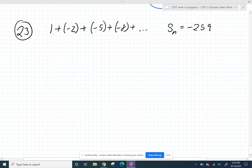So if we start adding up 1 plus negative 2 plus negative 5 plus negative 8, they want to know how far do we need to go to get a sum of negative 259.